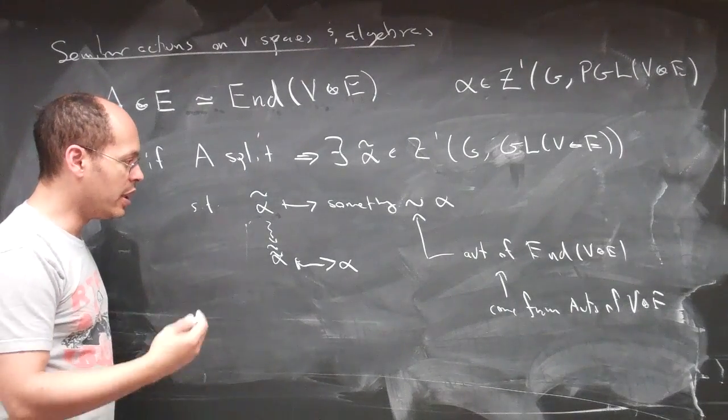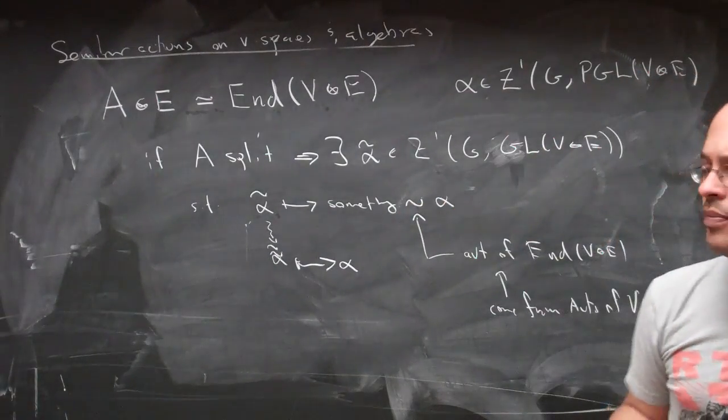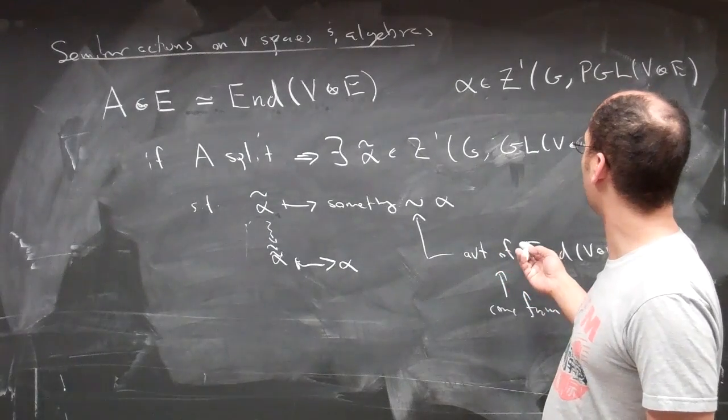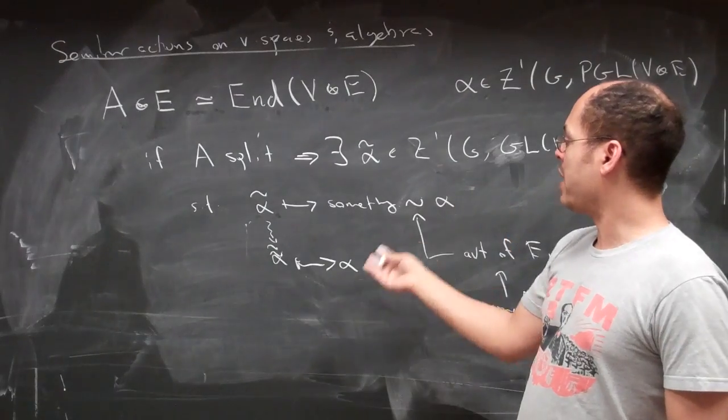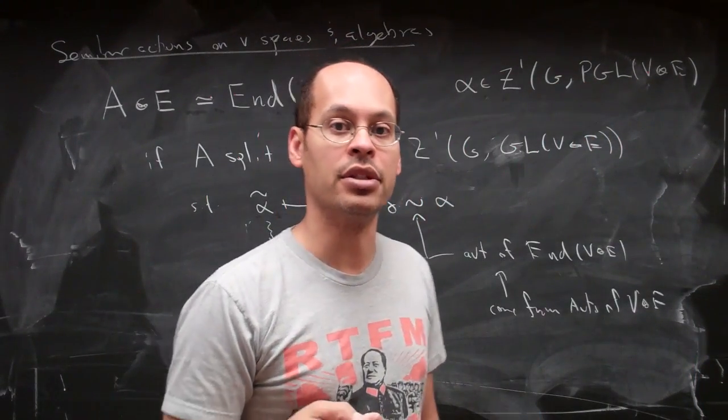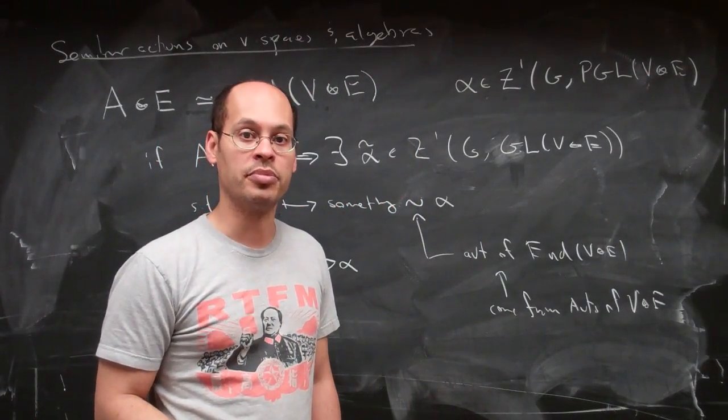And so the consequence is that if alpha is trivial, then I can in fact choose a co-cycle in GL which maps to my given co-cycle in PGL. I can really lift that action from an action on the endomorphisms to an action on the vector space.